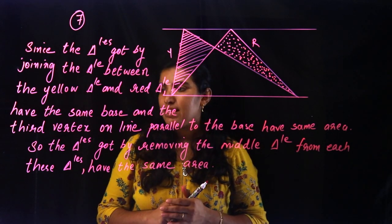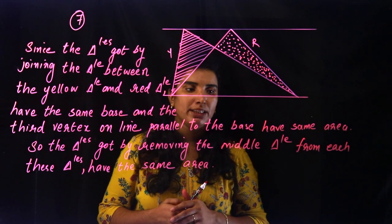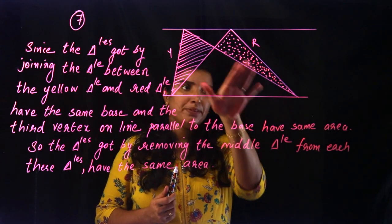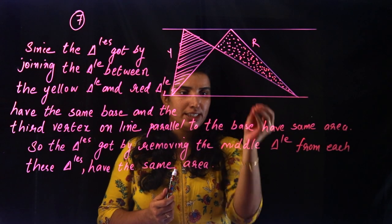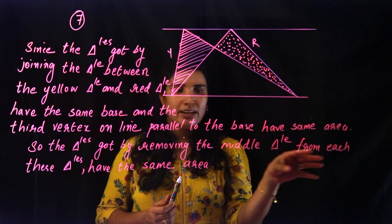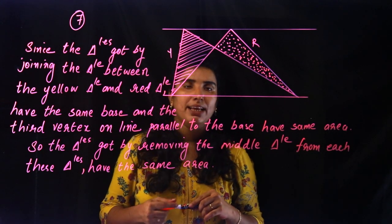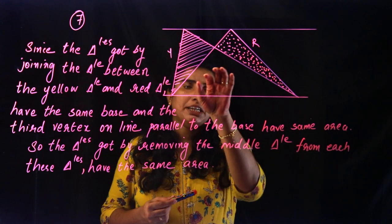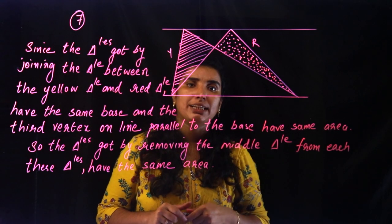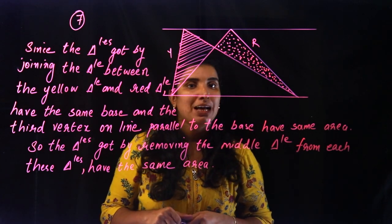Since the triangles formed by joining the yellow triangle and the red triangle have the same base and the third vertex on a line parallel to the base, they have the same area. So the triangles obtained by removing the middle triangle from each of these triangles also have the same area. So, the remove is the same area — yellow and red triangles are equal.